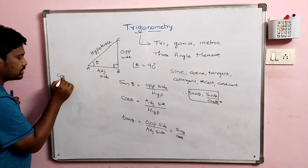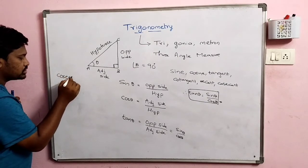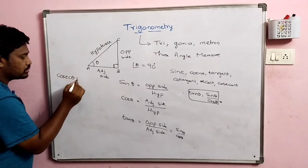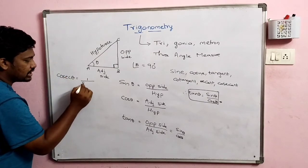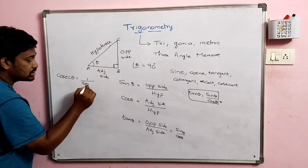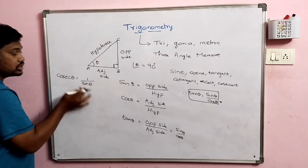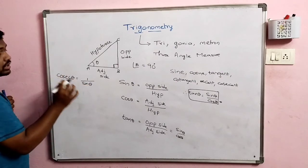Cosecant theta is equal to 1 divided by sin theta. The inverse of sin theta is cosecant theta. So, cosec θ = 1 / sin θ, which equals hypotenuse divided by opposite side.